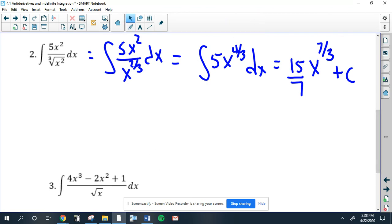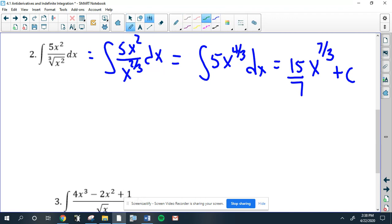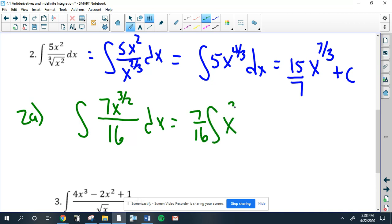We'll get to number three in a second. I want to do one bonus problem here. Say it was the integral of 7x to the 3/2 over 16. Now you don't really have to do anything with this because there is no x on the bottom. As a matter of fact, the 16 is a constant, so is the 7 for that matter. So you can think of this as just 7/16 times the integral of x to the 3/2 dx, and then just take it from there. That's easy.